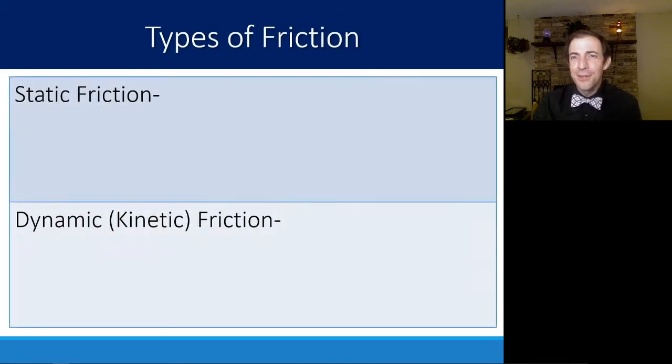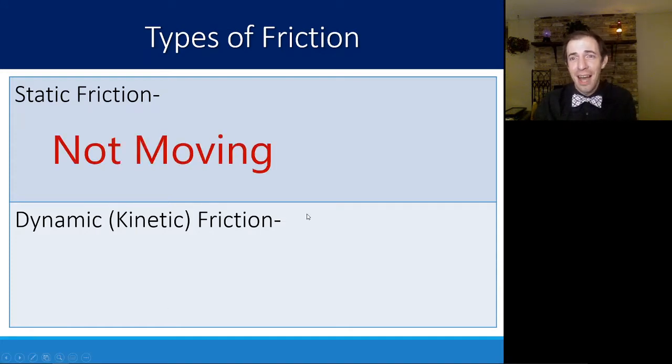There are two types of friction: we have static friction and we have dynamic or kinetic friction. Static friction is the friction of an object when it is not moving.